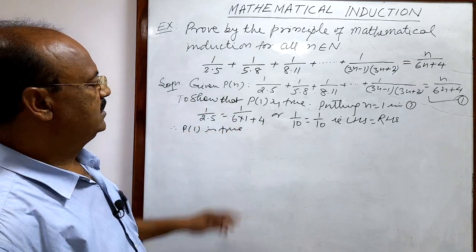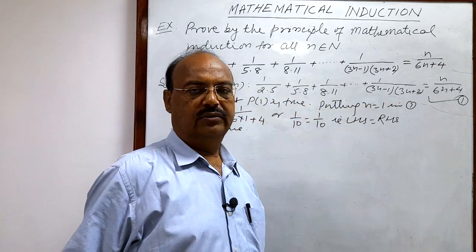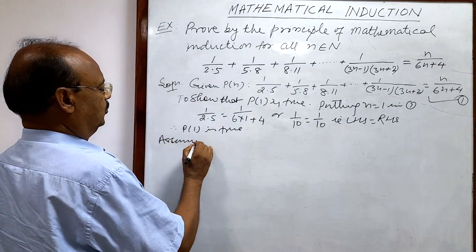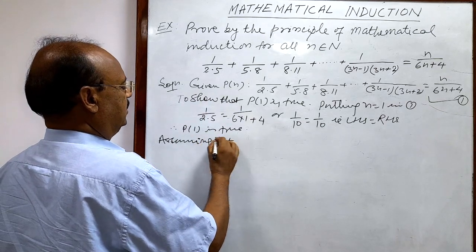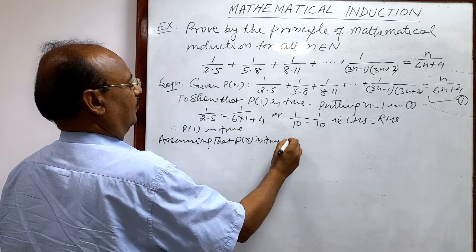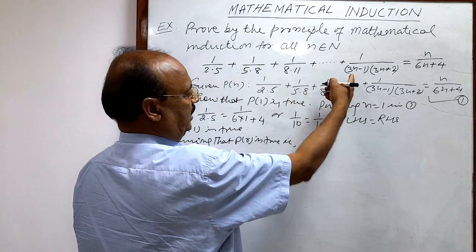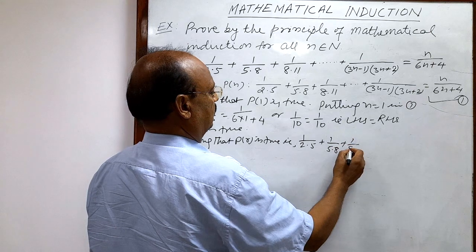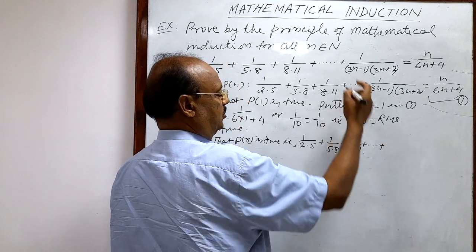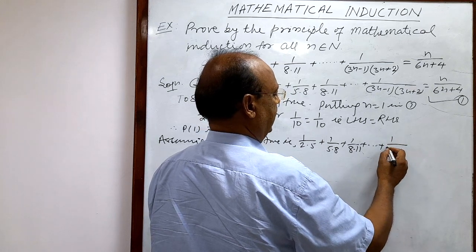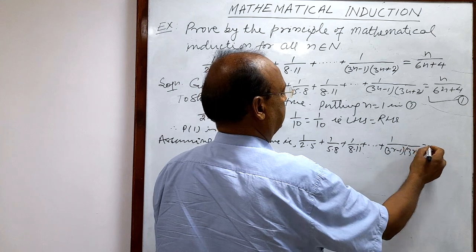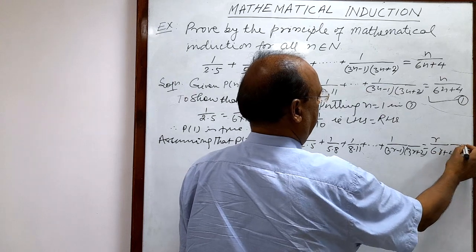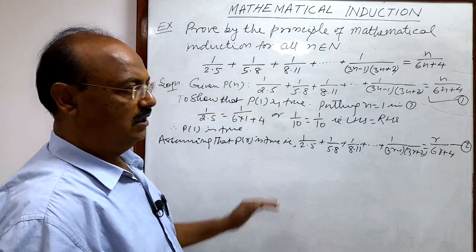Second step: we assume that P(r) is true. That is, putting n = r in relation number 1 gives: 1/(2×5) + 1/(5×8) + 1/(8×11) + ... + 1/((3r−1)(3r+2)) = r/(6r+4). Let us call this relation number 2.